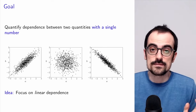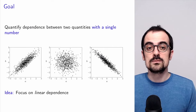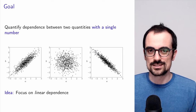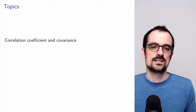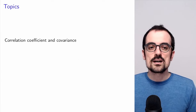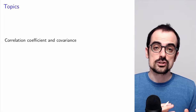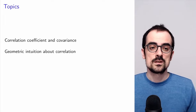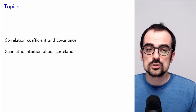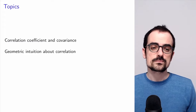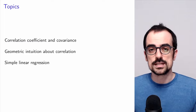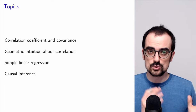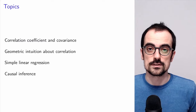We are sacrificing some information, but we will be able to summarize the linear dependence with a single number, which is extremely convenient. The topics we're going to cover are: the correlation coefficient and covariance — both their definition and properties — geometric intuition about correlation, simple linear regression, and finally the relationship between correlation and causal inference.